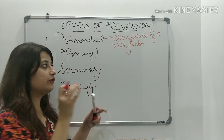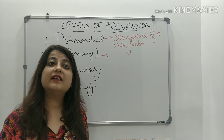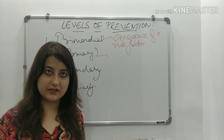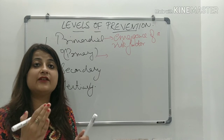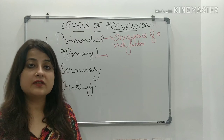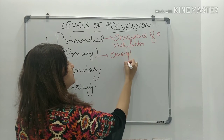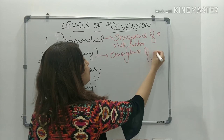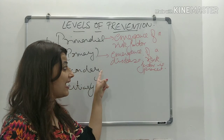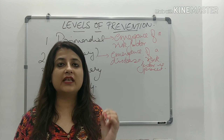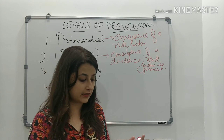What is primary prevention? The risk factor is already present. It is done when the risk factor is already present and we are trying to prevent the emergence of a disease. In primary prevention, the action is taken prior to the onset of a disease and this will remove the possibility that a disease will ever occur.